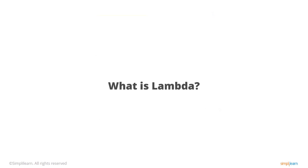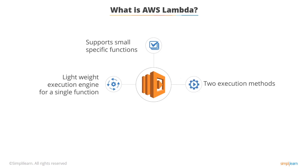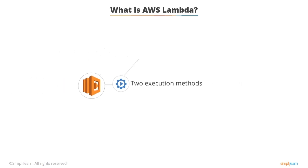What is Lambda? AWS Lambda is a small, lightweight execution engine for a single function. Instead of maintaining and building a large fleet of EC2 instances and a large code base, you can write small, specific functions to perform the required tasks. Lambda functions have two main execution methods: requestResponse and event.